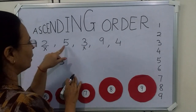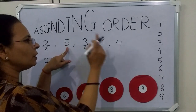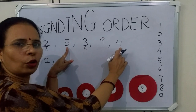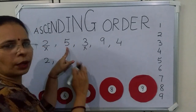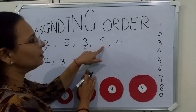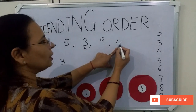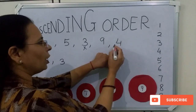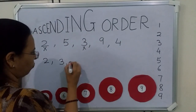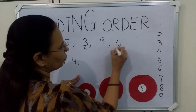Now again we have to see 5. Is 5 smaller than 9? Yes. Is 5 smaller than 4? No, so we have to skip 5. 9 is the biggest number, so we will take 4. 4 is smaller than 9 and 5, so we will write 4. 4 we have written, so we will cut it.